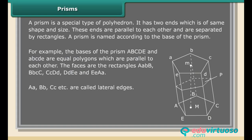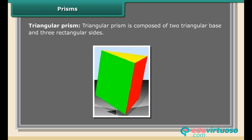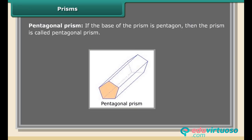Prisms are classified according to their bases. Triangular prism: A triangular prism is composed of two triangular bases and three rectangular sides. Pentagonal prism: If the base of the prism is a pentagon, then the prism is called a pentagonal prism.